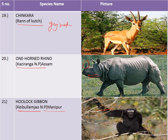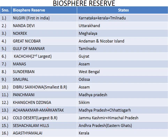Now let's move on to important biosphere reserves of India. The first is the Nilgiri Biosphere Reserve, covering the states of Karnataka, Kerala, and Tamil Nadu. Second is the Nanda Devi Biosphere Reserve in Uttarakhand. Third is Nokrek Biosphere Reserve in Meghalaya. Fourth is the Great Nicobar Biosphere Reserve in the Union Territory of Andaman and Nicobar Islands. Fifth is Gulf of Mannar in Tamil Nadu.